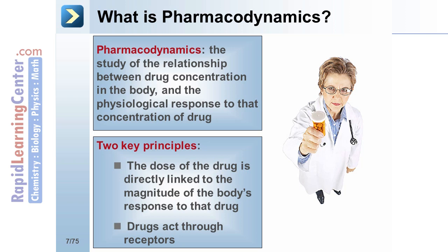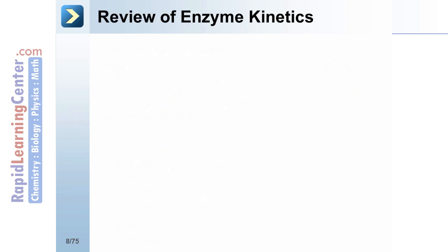The second key principle is that drugs act through receptors. Thus, it is critical to understand the types of interactions between drugs and receptors, which leads us to a discussion of enzyme kinetics, since interactions between a drug and receptor rely on similar kinetics. An understanding of pharmacodynamics is rooted in an understanding of enzyme kinetics.